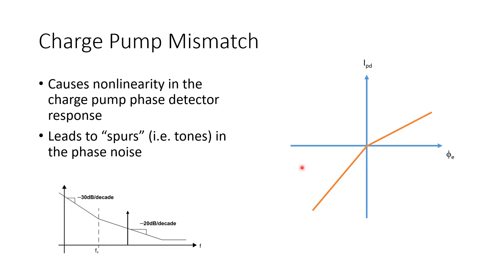One way you might understand that is to imagine that, because there's in this case larger pull-down current than pull-up current, you can imagine that a single pull-down current is going to require multiple pull-up current pulses to cancel it. So you can imagine you might get periodic patterns of a single pull-down current followed by multiple pull-up currents to counteract it.